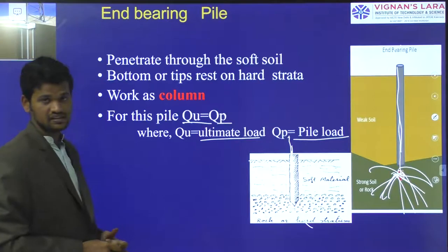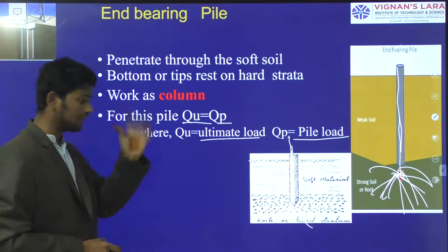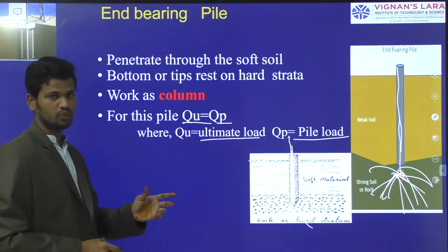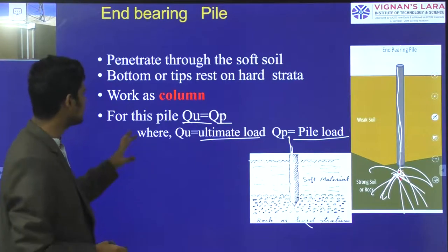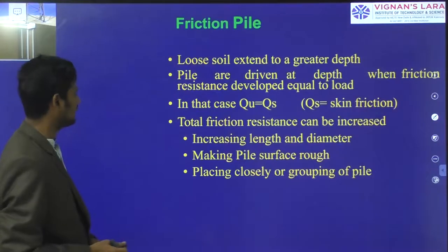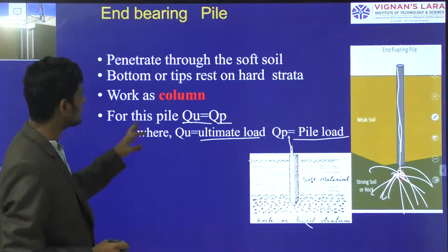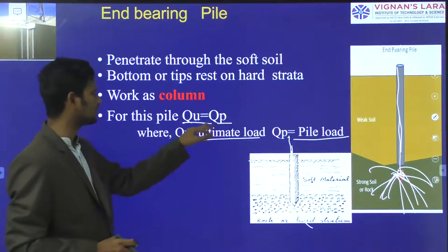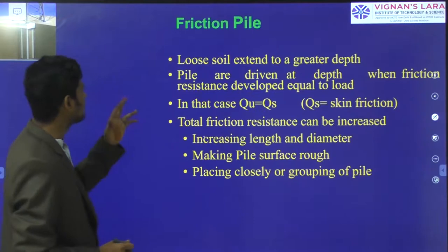End bearing piles are piles which distribute or transfer the loads through end or point bearing. For this pile, QU equals QP, where QU is the ultimate load and QP is the pile point load carrying capacity.